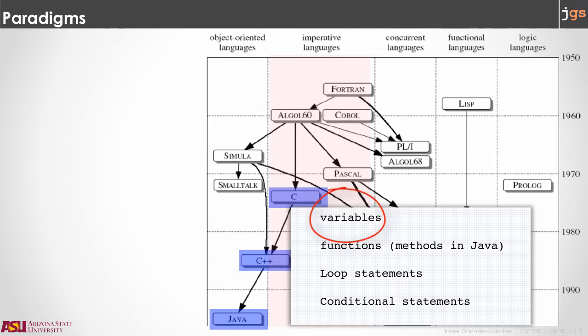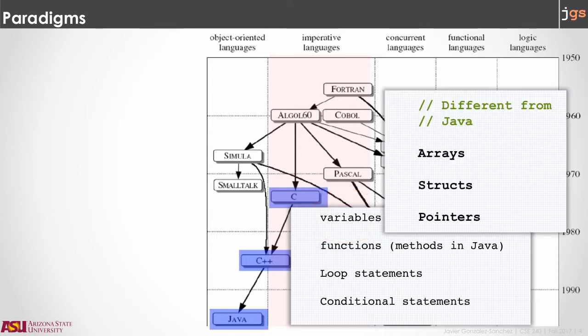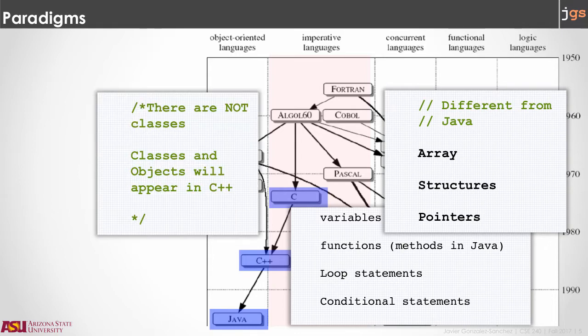However, variables and in general data handling is going to have important differences, and we are going to use most of our time this week reviewing that. Particularly, we need to review arrays and something called structs and pointers. Obviously, there are no classes in C. C is an imperative language.